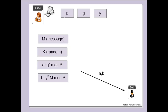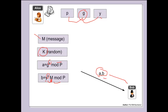Alice takes the three values P, G, and Y together along with the message she wants to send. She generates her own random number K, then calculates A as G to the power of K mod P. She also calculates B as Y to the power of K, multiplied by the message M, then takes the mod of P. This encrypted value is sent as A and B to Bob.